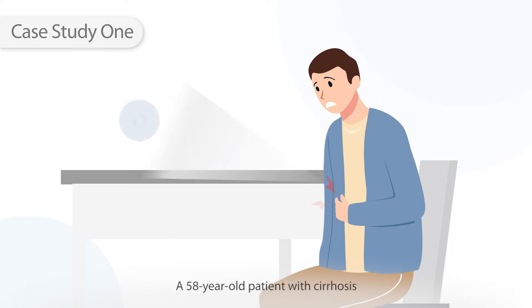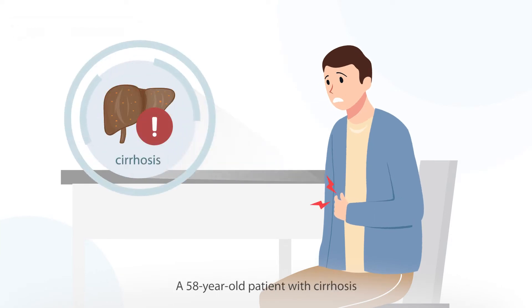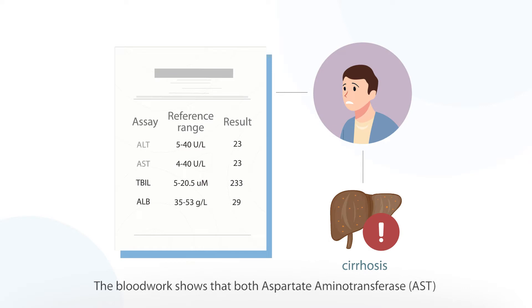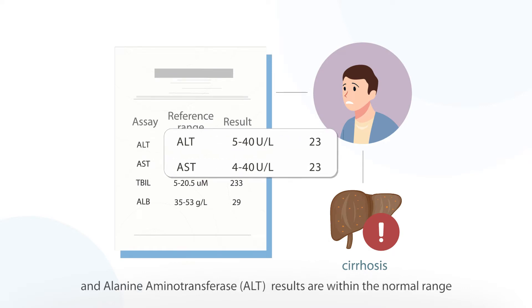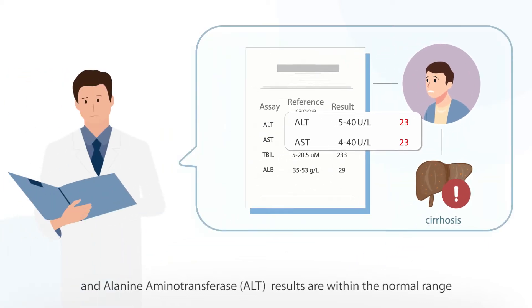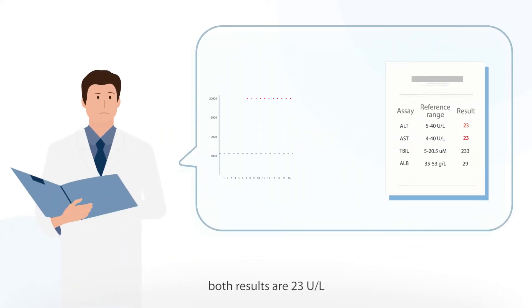Case Study 1: a 58-year-old patient with cirrhosis. The blood work shows that both aspartate aminotransferase and alanine aminotransferase results are within the normal range. Both results are 23 units per liter.